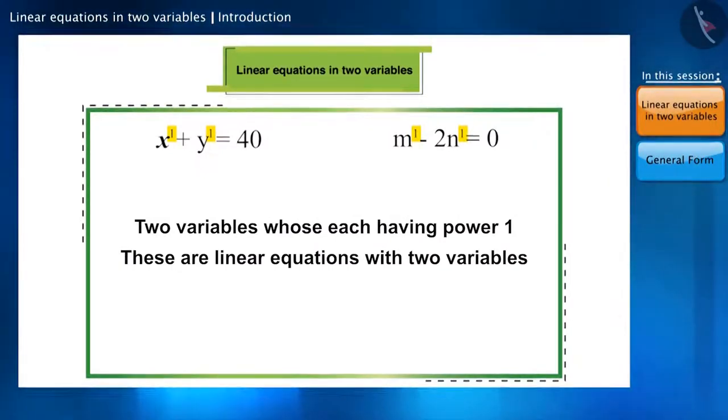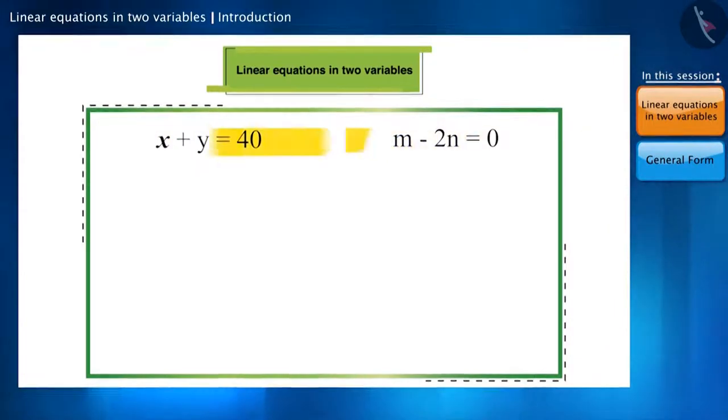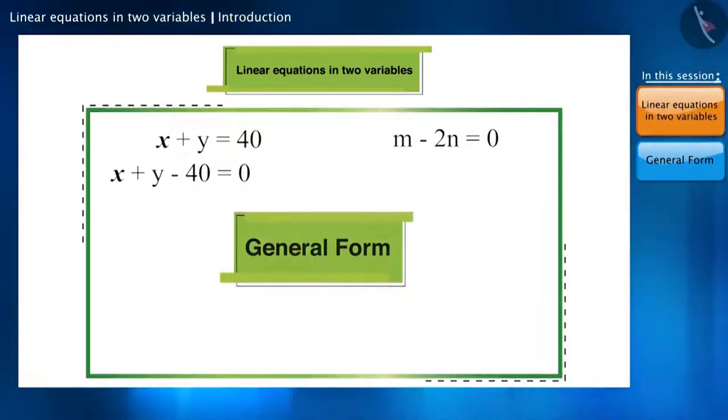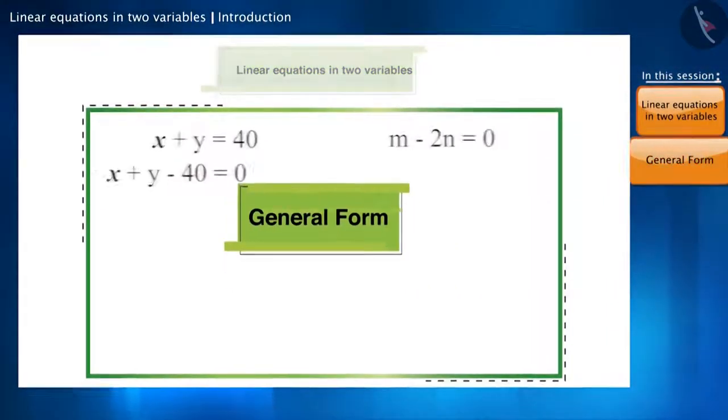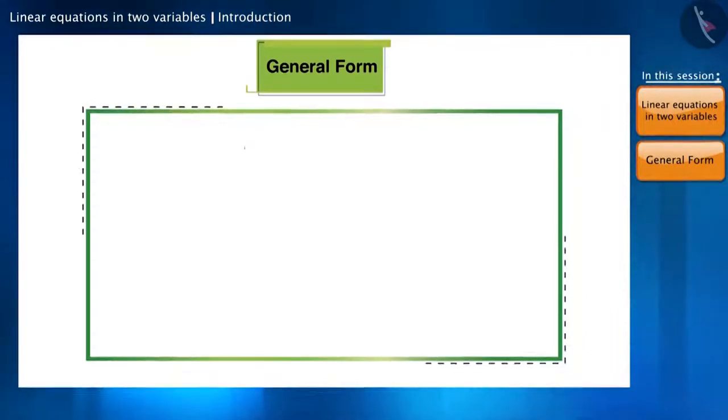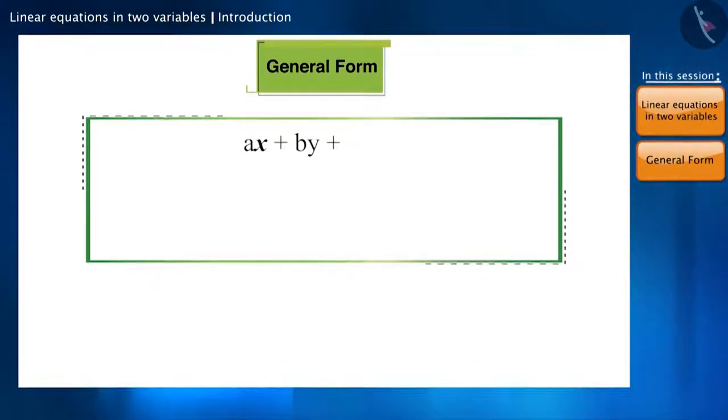We can write the equation X plus Y is equal to 40 as X plus Y minus 40 is equal to zero as well, and from this we reach this general form. Generally we write it in the form of aX plus bY plus c is equal to zero.